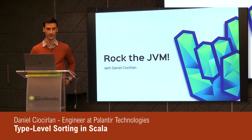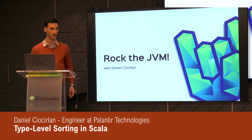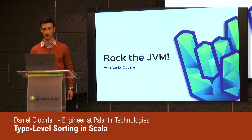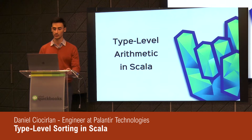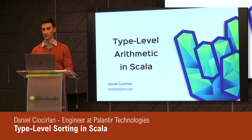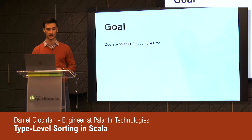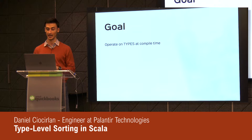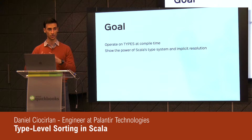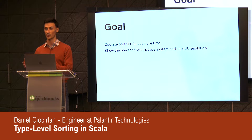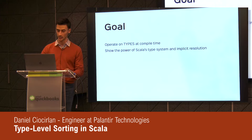Hi everyone, my name is Daniel, and I am an instructor of Scala at Rock JVM. In this talk I'm going to talk about type level programming in Scala, in particular type level arithmetic. The goal is to show you how to operate on types at compile time — we consider types as numbers and make the compiler infer relationships between those types for us. I'd like to show the power of Scala's type system and implicit resolution mechanism to the point where we can force the Scala compiler to solve constraint satisfaction problems for us, which is quite amazing.